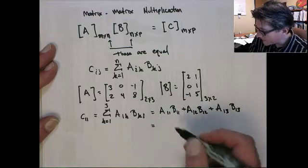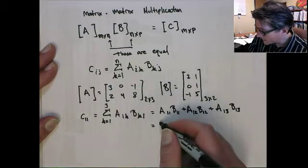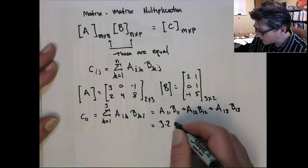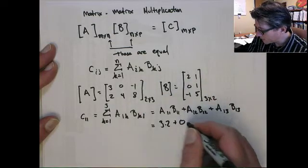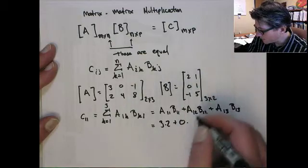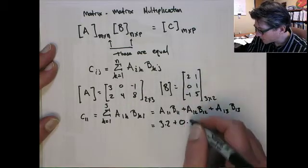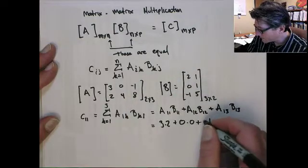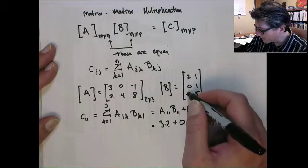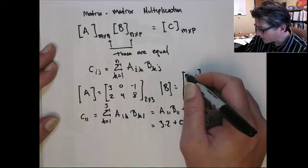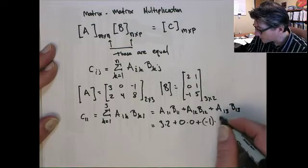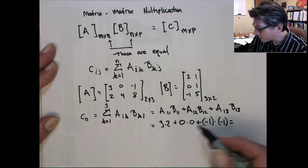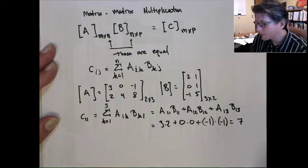And we can put the numbers in there. a11 is this guy, so that's 3, b11 is 2, plus a12 which is 0 times b12 which is also 0, plus a13 minus 1 times b13, which is the third row first column, which is also minus 1, and this would be 6 plus 0 plus 1, which would be 7.